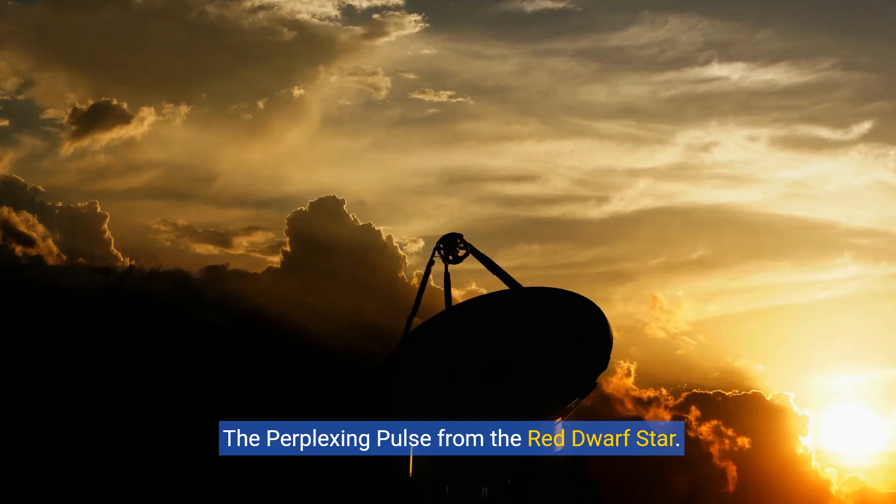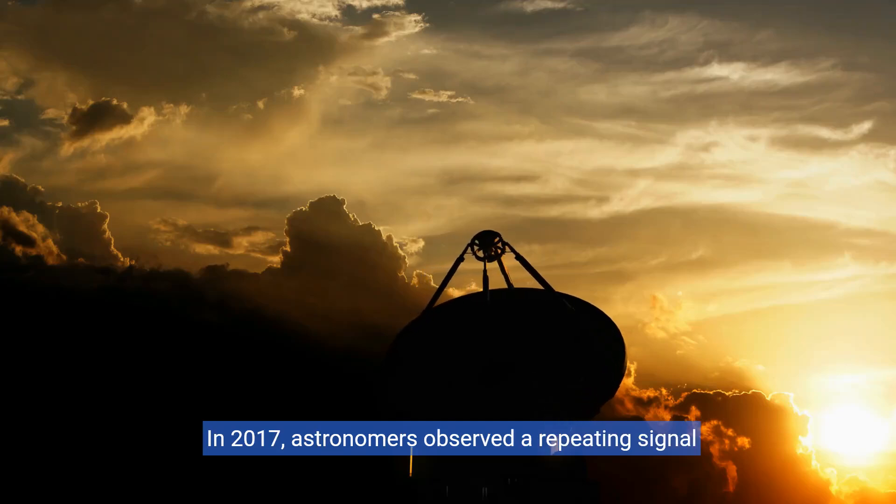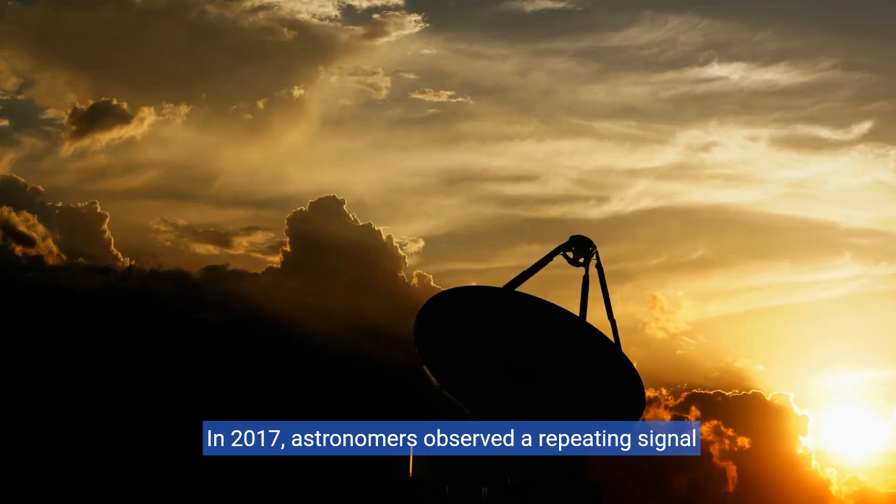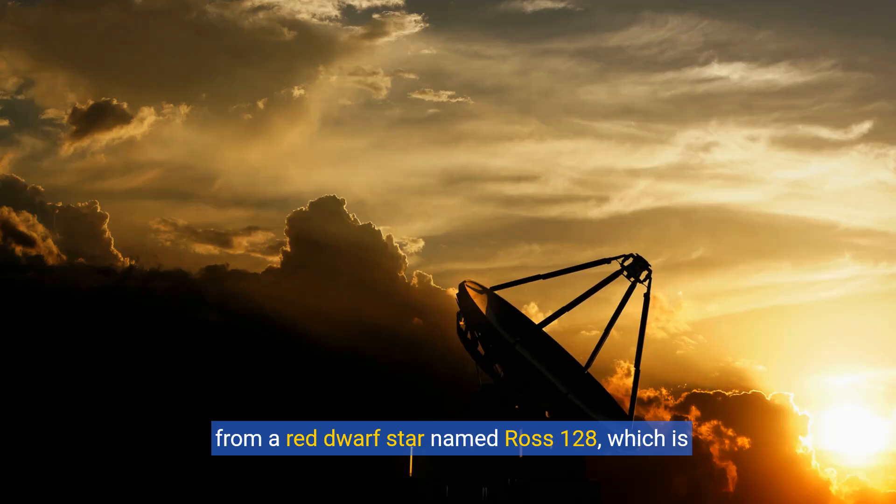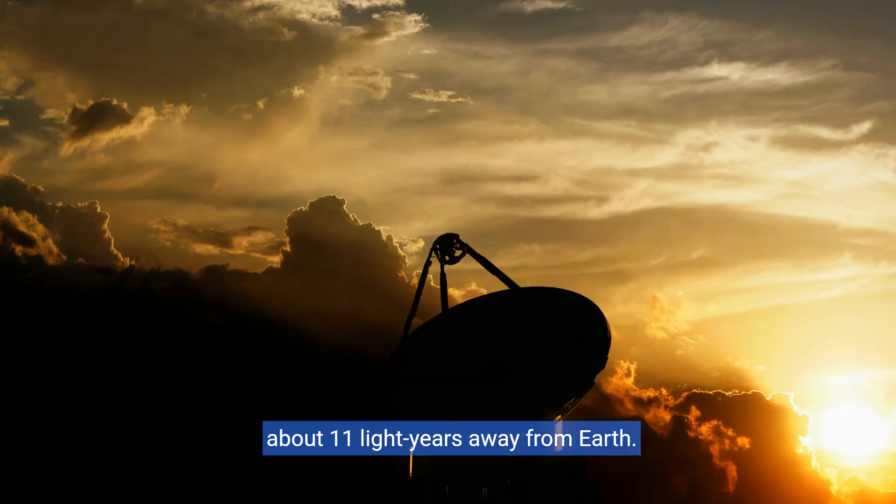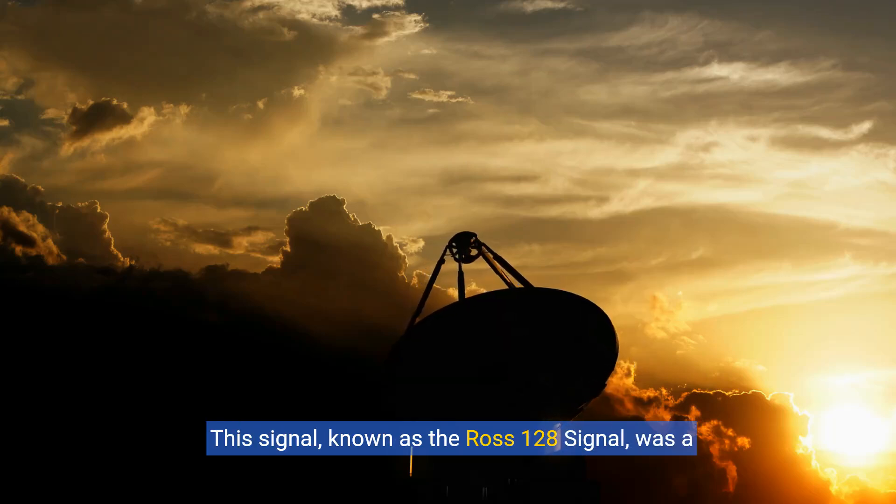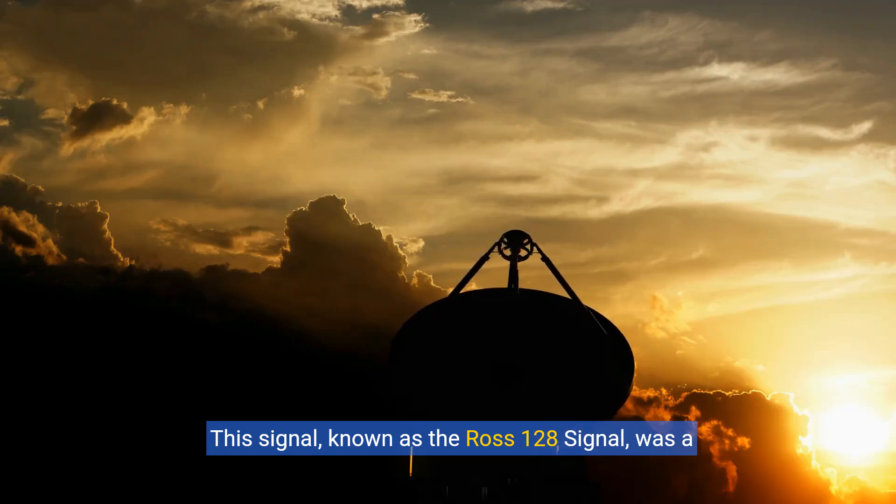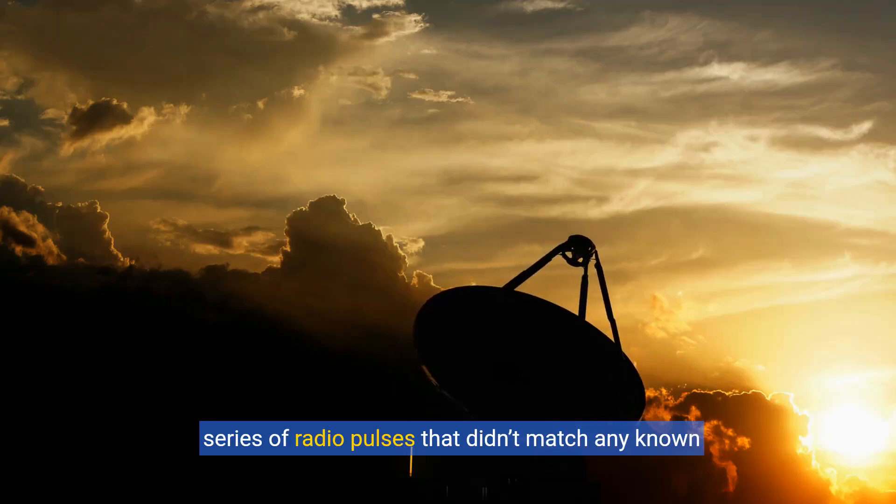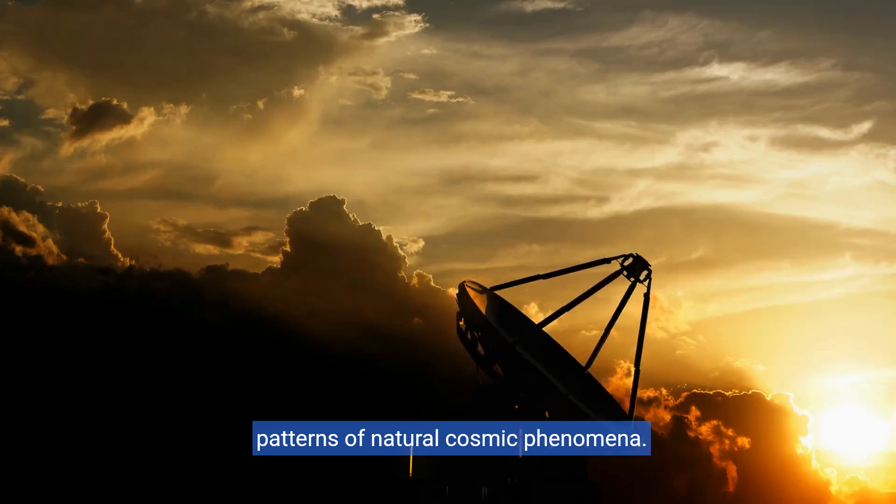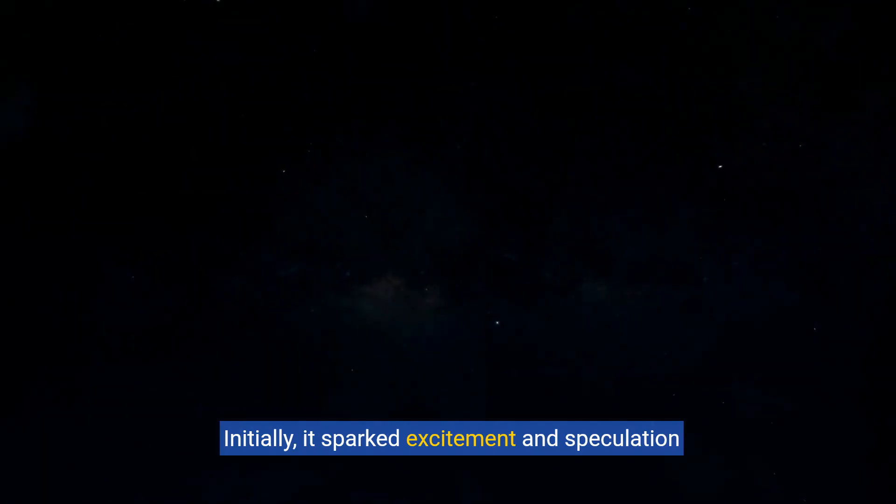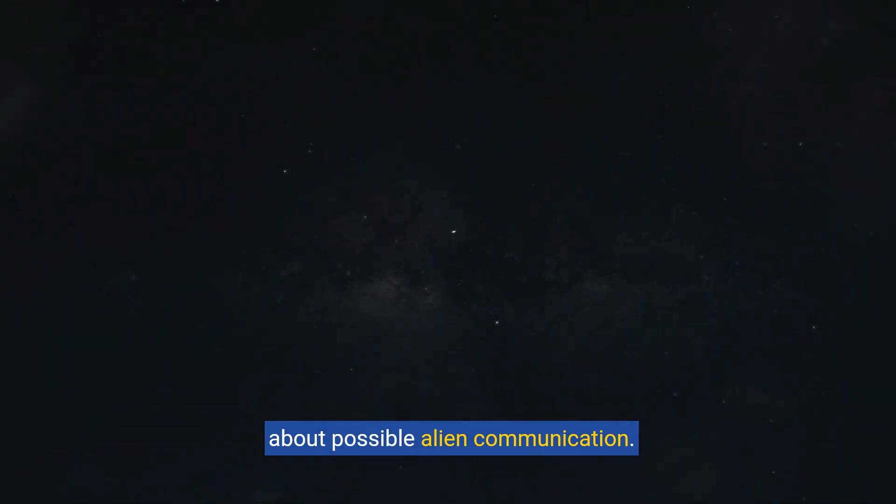The perplexing pulse from the red dwarf star. In 2017, astronomers observed a repeating signal from a red dwarf star named Ross 128, which is about 11 light-years away from Earth. This signal, known as the Ross 128 signal, was a series of radio pulses that didn't match any known patterns of natural cosmic phenomena. Initially, it sparked excitement and speculation about possible alien communication.